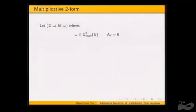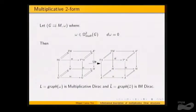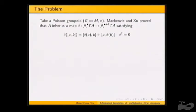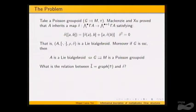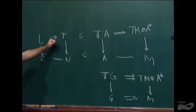Why is this not the best answer? It is known from Mackenzie and Xu that when you have a Poisson groupoid, your Lie algebroid inherits a differential compatible with the bracket, making it a Lie bialgebroid. Moreover, if the groupoid is source-simply-connected, there is an equivalence. So the question is: what is the relation between this differential and the infinitesimal Dirac structure we obtain?